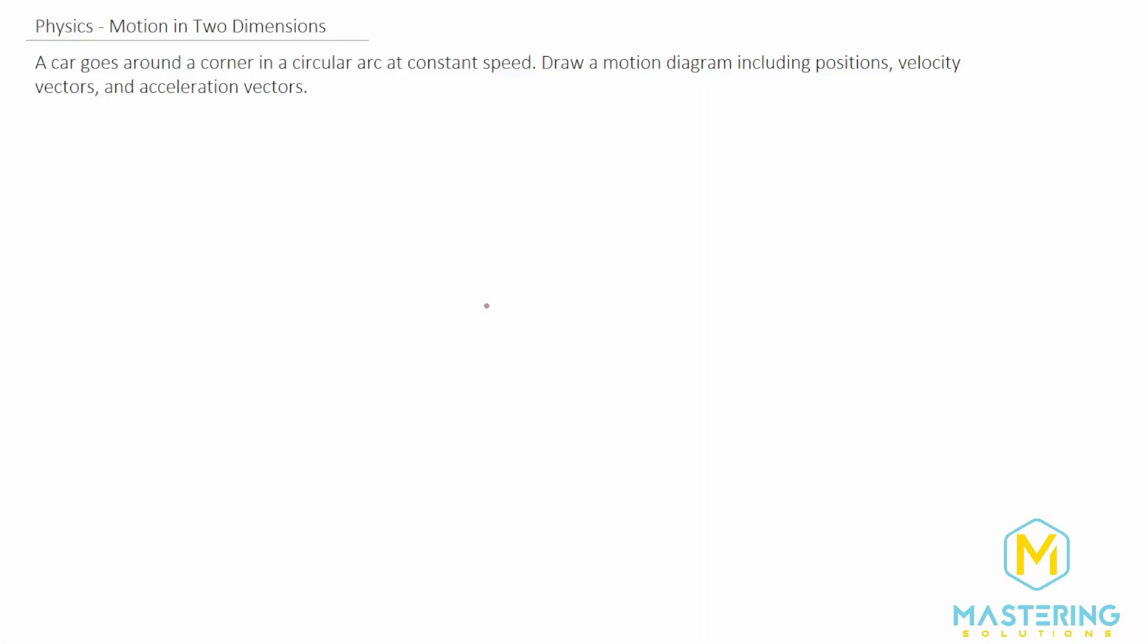Welcome to Mastering Solutions. In this motion in two dimensions problem, they tell us that a car goes around a corner in a circular arc at a constant speed, and they want us to draw a motion diagram including positions, velocity vectors, and acceleration vectors.